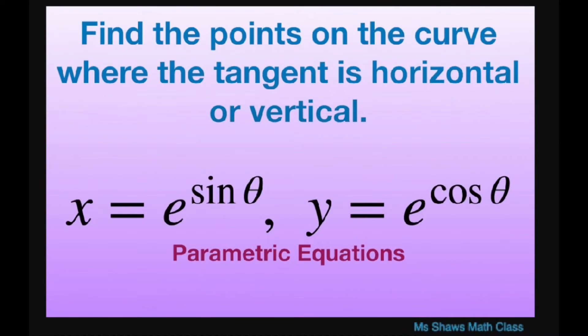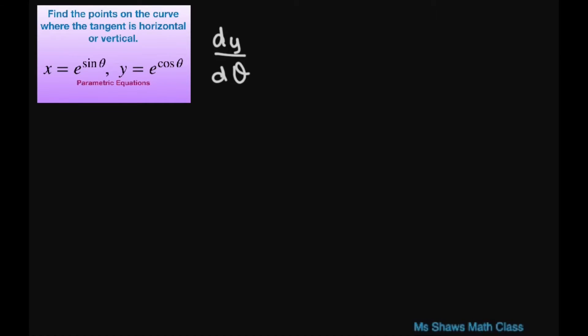Hi everyone. We're going to find the point on the curve where the tangent is horizontal or vertical for our two parametric equations given. So first let's find the vertical tangent — that's taking the derivative of y with respect to theta. Looking at y, that's going to be negative sine of theta times e to the power of cosine of theta, and we set this equal to zero.